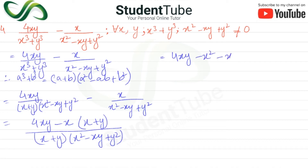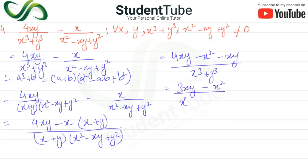Combining the fractions: 4xy minus x(x + y) over (x + y)(x² - xy + y²), which equals 4xy minus x² - xy over x³ + y³, giving us 3xy - x² upon x³ + y³ as the answer.